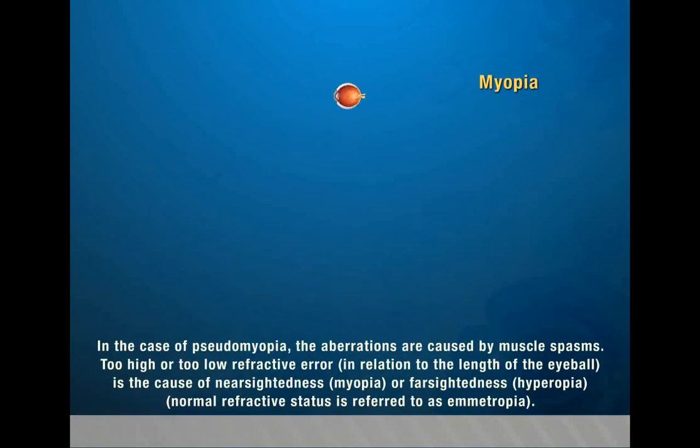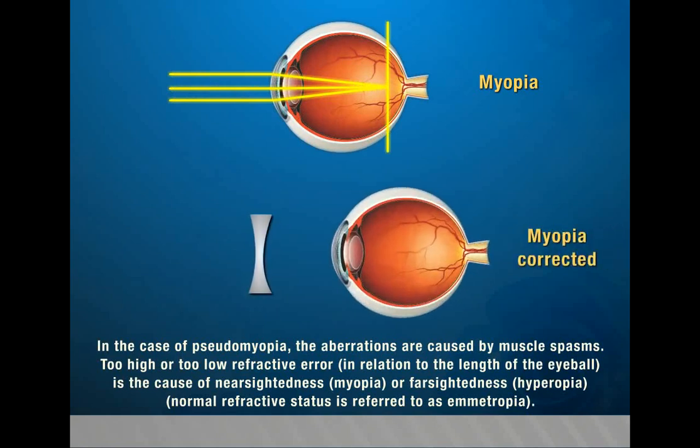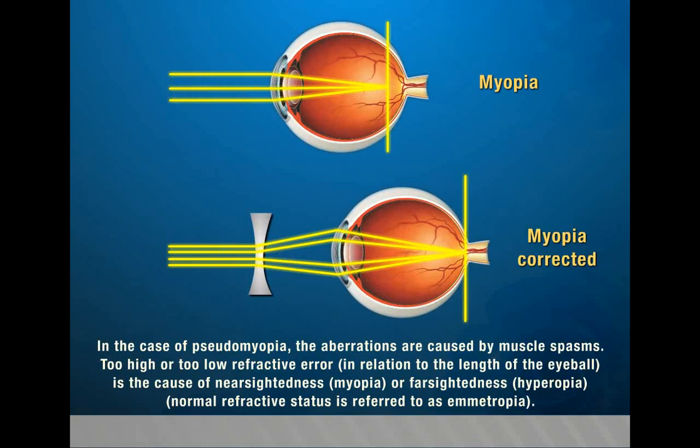In the case of pseudomyopia, the aberrations are caused by muscle spasms. Too high or too low refractive error in relation to the length of the eyeball is the cause of nearsightedness, i.e. myopia, or farsightedness, i.e. hyperopia. Normal refractive status is referred to as emmetropia.